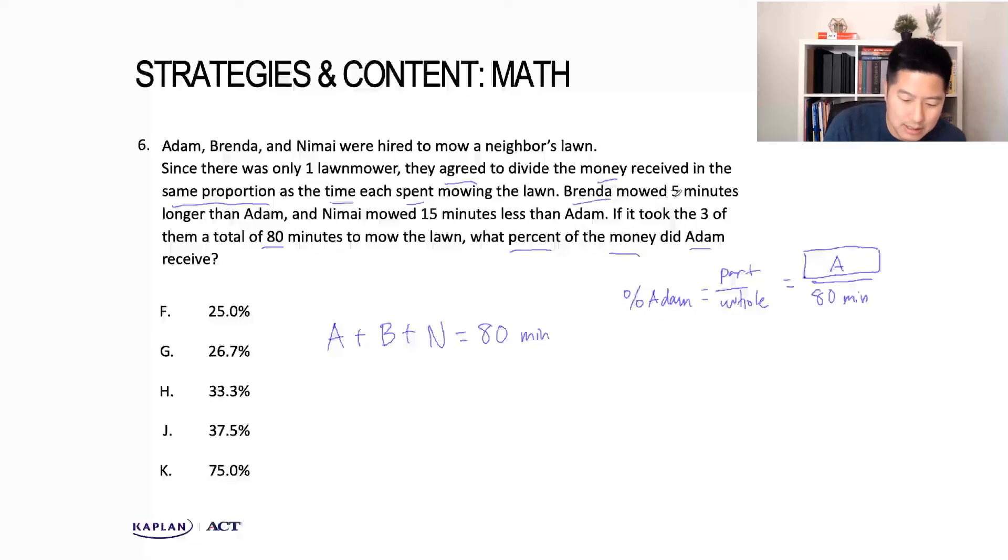I know that Brenda mowed five minutes longer than A, so I can replace B with A plus 5. I also know that Nami mowed 15 minutes less than Adam, so N can be replaced with A minus 15. I'll add that all up, and they still equal 80 minutes. If I combine like terms, I've got 3A, and the 5 and 15 means I've got minus 10 equals 80. I add 10 to both sides, that gives me 3A equals 90. Divide both sides by 3, and A equals 30.